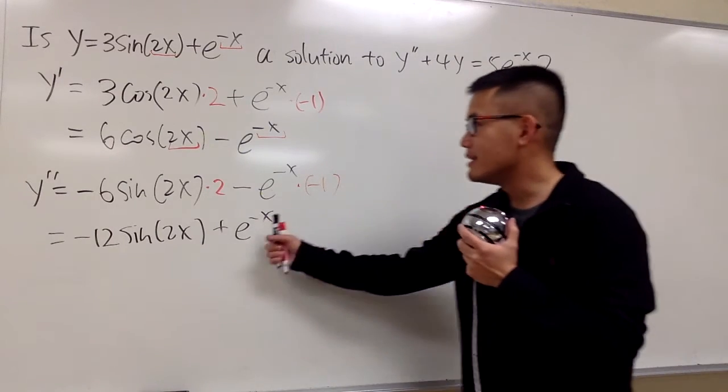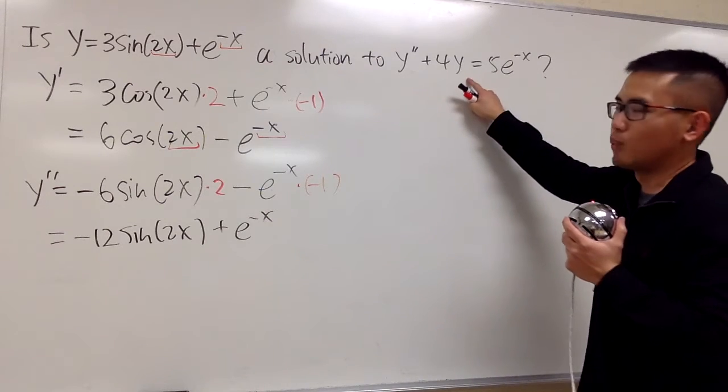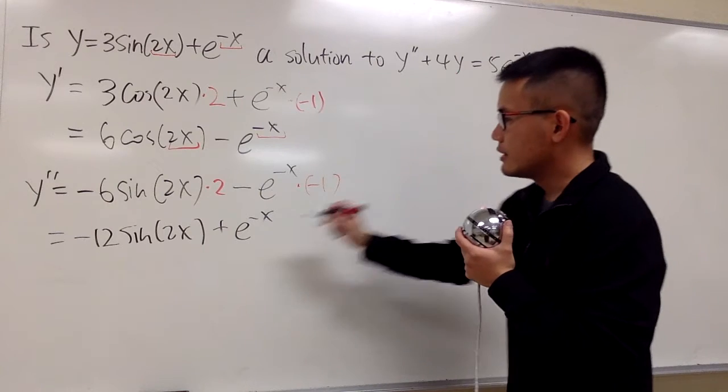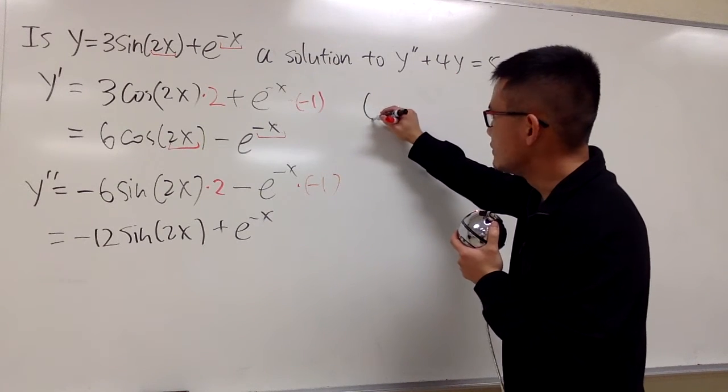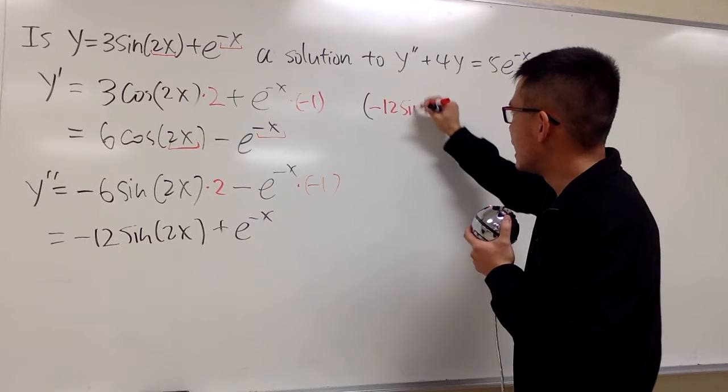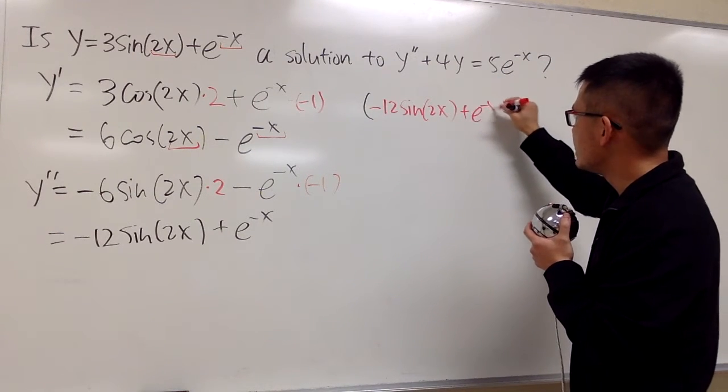And now, we're just plugging this and the original into y double prime and the y. And let's do some algebra from there. Y double prime is that, so let me open the parentheses first. First, we'll have negative 12 sine of 2x, and then we add it with e to the negative x.